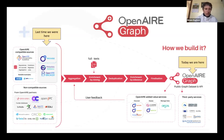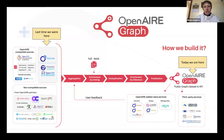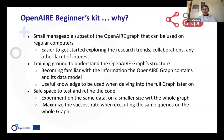Last time Claudio presented the very first part of the pipeline — the collection of data. Today we are at the opposite end of the pipeline, when the graph is ready to be provided to the user. But this graph is really big — we have a lot of research products, projects, organizations, and many relationships. So it can be very difficult for a user to get and analyze the data, which is why OpenAIRE developed the beginner's kit.